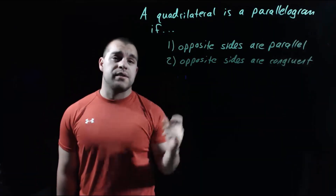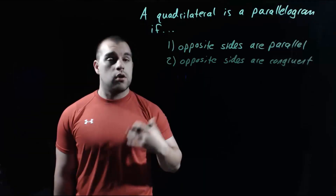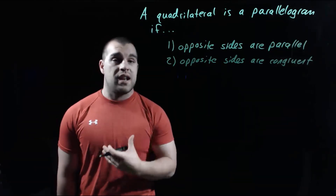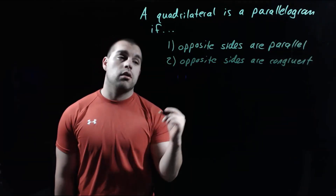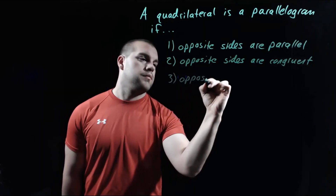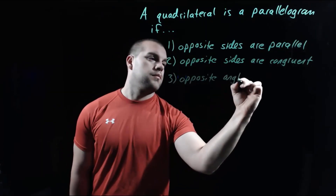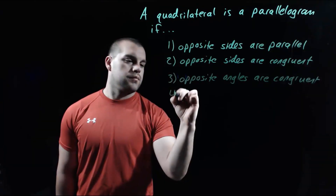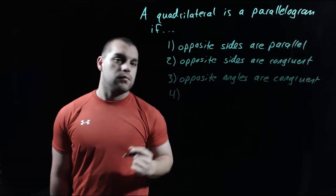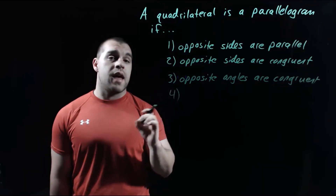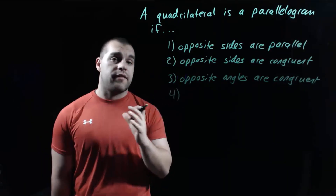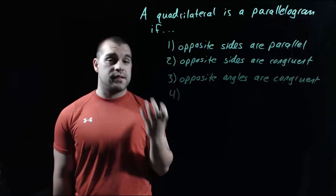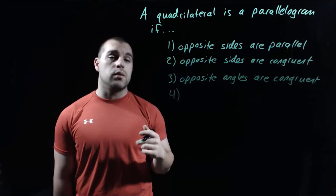Along with those opposite sides being congruent to each other, we're also going to have opposite angles that are congruent. Our fourth property is that consecutive angles — angles that are right next to each other — are going to be supplementary to each other.